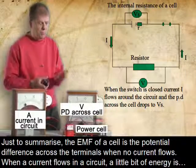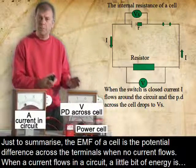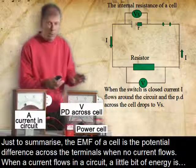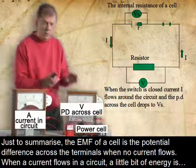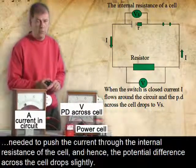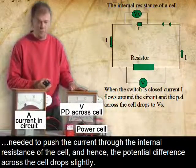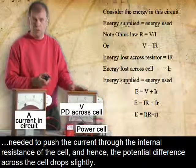So just to summarize, the EMF of the cell is the potential difference across the terminals when no current flows. When a current flows in the circuit, a little bit of energy is needed to push the current through the internal resistance of the cell. And hence, the potential difference across the cell drops slightly.